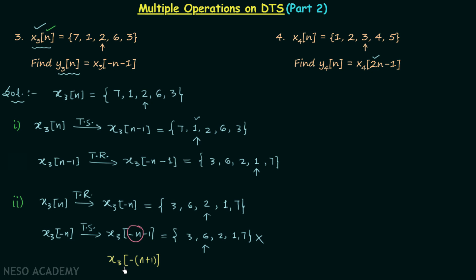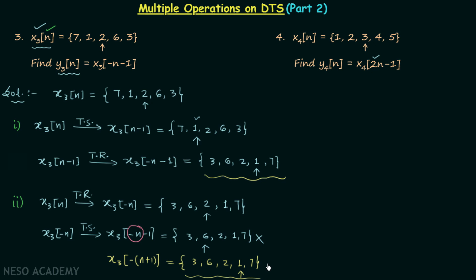When you open the bracket correctly, you get x3(-n-1), but the operation is now left shifting by one integer place rather than right shifting. This gives signal 3, 6, 2, 1, 7 with the arrow moving to the right, placing it below 1. Comparing this result with case 1, they are the same answer — confirming that you get the correct result by always performing operations with respect to the variable n.